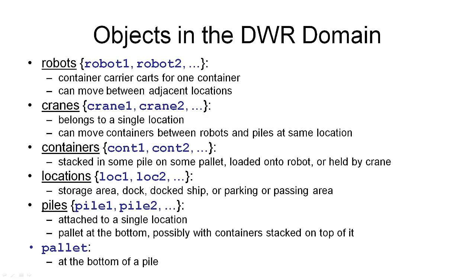The STRIPS representation is based on first-order predicate logic. This means we have objects in our domain and these objects are somehow related to each other. In the DocWorker Robot domain, we have several types of objects. The first type are robots — we introduce symbols like robot 1 and robot 2 to refer to these robots in our logic, and we can have an arbitrary number of symbols denoting robots of type robot. Robots are the objects that carry containers from one location to another adjacent location. The next type of objects are cranes, and again we have symbols to denote the different cranes in our domain. Cranes can be used to stack or unstack containers from a pile, or load or unload containers onto a robot.